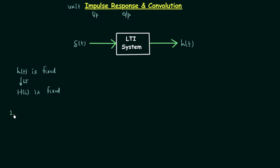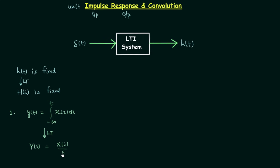In this problem the relationship is given: y(t) is equal to the integration from minus infinity to t of x(τ) dτ. Now if you know how to calculate the Laplace transform of an integration, you can easily find the Laplace transform of this system relationship and have the relationship in the frequency domain. We will take the Laplace transform, which gives us Y(s) = X(s)/s. If you don't know some basic Laplace transforms, you can visit our forum where standard Laplace transforms are provided.